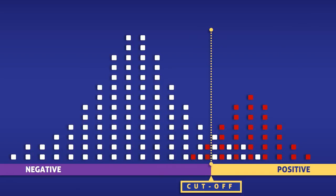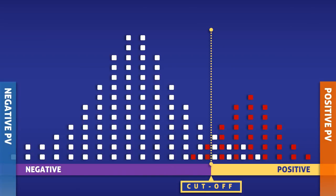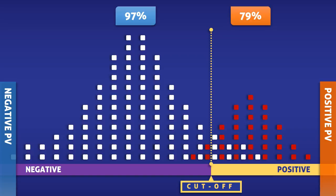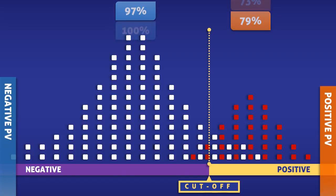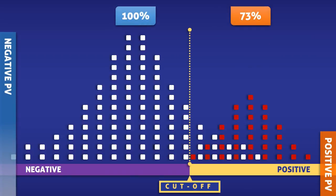Now let's directly compare the positive and the negative predictive value in this cohort of patients. At the current cutoff level for a positive test, the negative predictive value is 97% and the positive predictive value is 79%. If we were to change the threshold for a positive test, then we would simultaneously change the positive and negative predictive values. By shifting the threshold to the left, we can obtain a 100% negative predictive value, so with this test, the condition will definitely be absent if a person has a negative test.